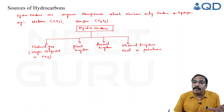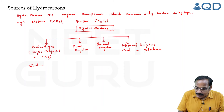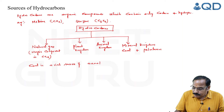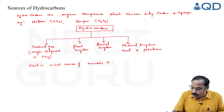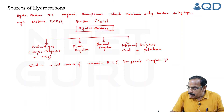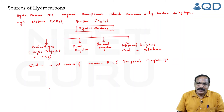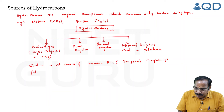Coal is a rich source of aromatic hydrocarbons — that is, organic compounds containing a benzene nucleus, also called benzenoid compounds. Petroleum, on the other hand, is mainly consisting of aliphatic hydrocarbons. Aliphatic means open chain — hydrocarbons with an open chain of carbon atoms are called aliphatic hydrocarbons.